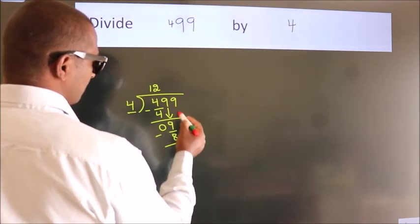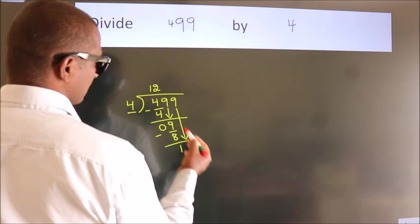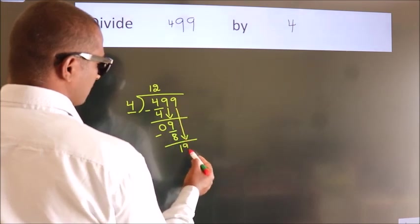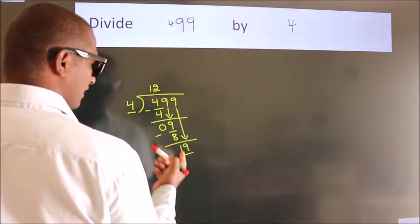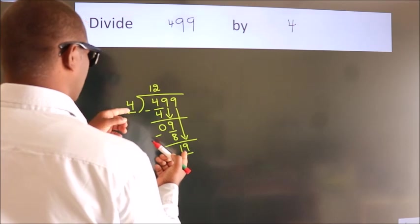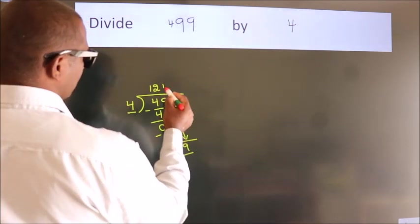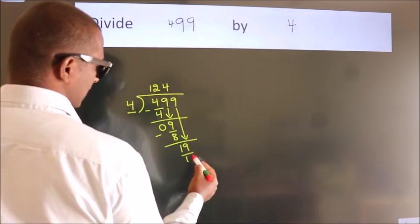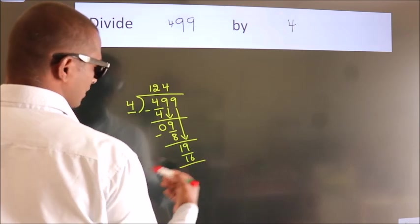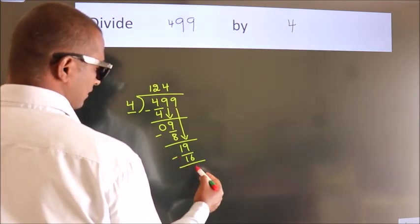After this, bring down the beside number, so 9 down, so 19. A number close to 19 in 4 table is 4 times 4, which is 16. Now we subtract, we get 3.